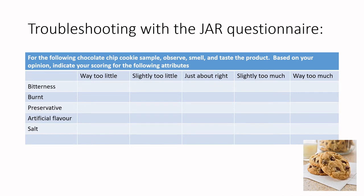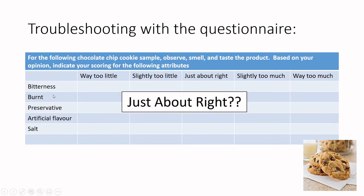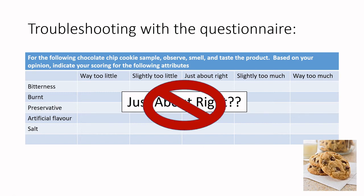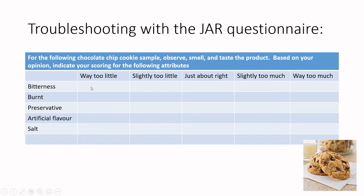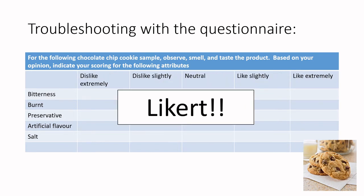When troubleshooting just about right, a common mistake is throwing in negative attributes. Having 'way too little bitterness' or 'way too little burnt' because you cooked your cookie properly doesn't make sense — the just about right attribute doesn't work in that case. If you have issues with negative attributes like artificial flavor used as a cost-saving measure, those are better suited to a Likert questionnaire.